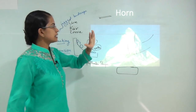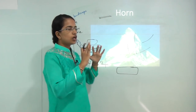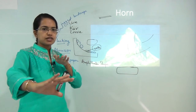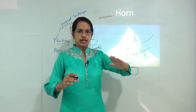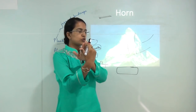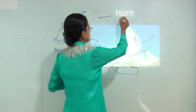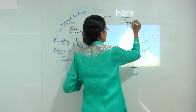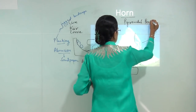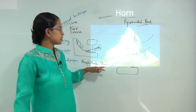A horn is formed when three or more cirques form in different directions — one cirque going this way, another that way, and more in other directions. This formation of a horn is also known as a pyramidal peak, and it is another erosional landform commonly seen in glacial topography.